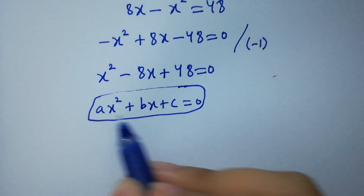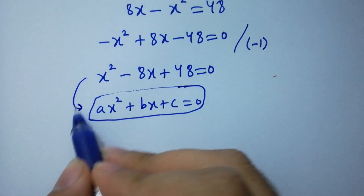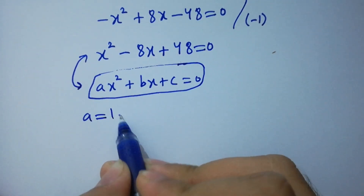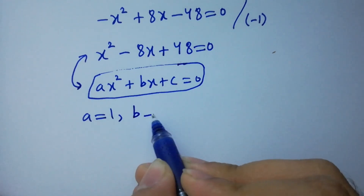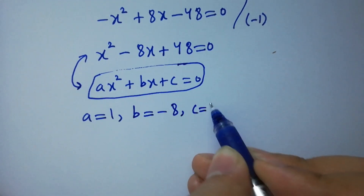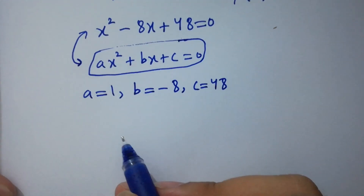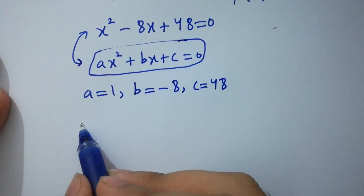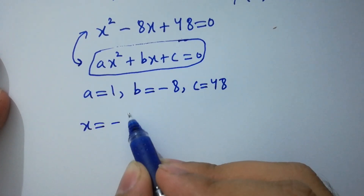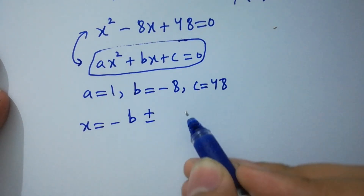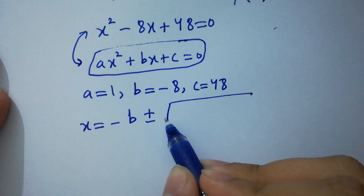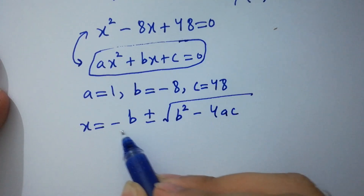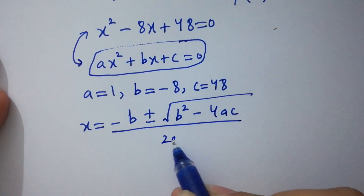By comparing, we have a equal to 1, b equal to minus 8, and c equal to 48. Applying the quadratic formula: x equals minus b plus or minus square root of b squared minus 4ac, all over 2a.